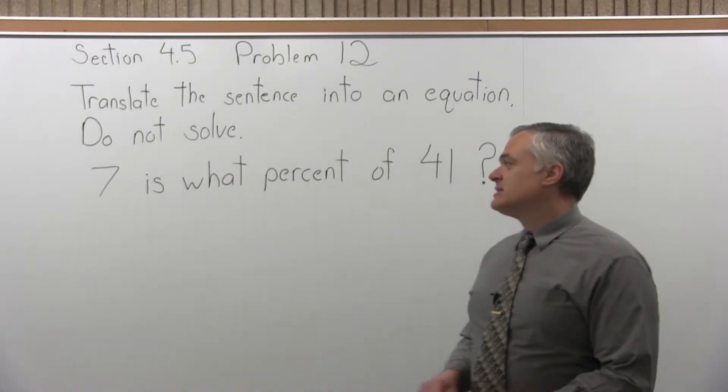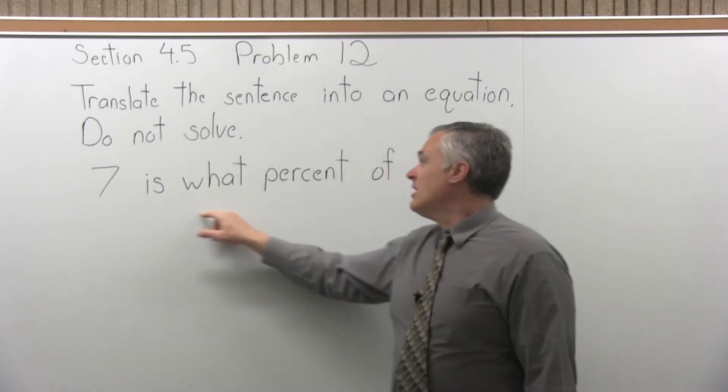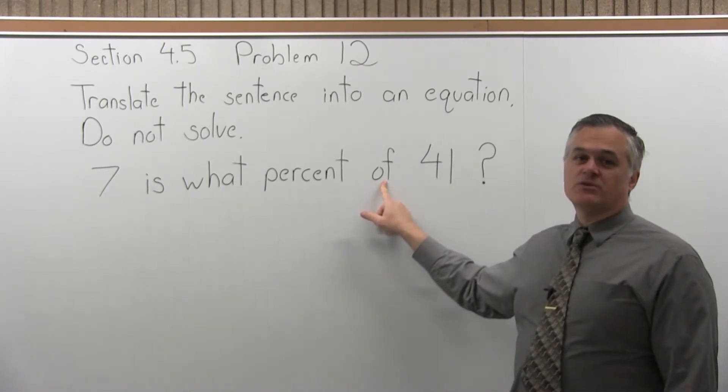So when you translate a sentence to an equation, is will be a keyword that gets replaced with an equals. Of is a keyword that gets replaced with a multiplication.